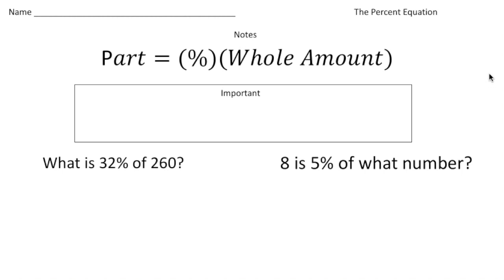So what exactly is the percent equation? Well, the percent equation is an equation that allows you to solve simple, basic percent problems. Here it is: the part equals the percent times the whole amount. The really important thing about this is the percent always needs to be written in decimal form. Let's write down: percent must be written in decimal form.